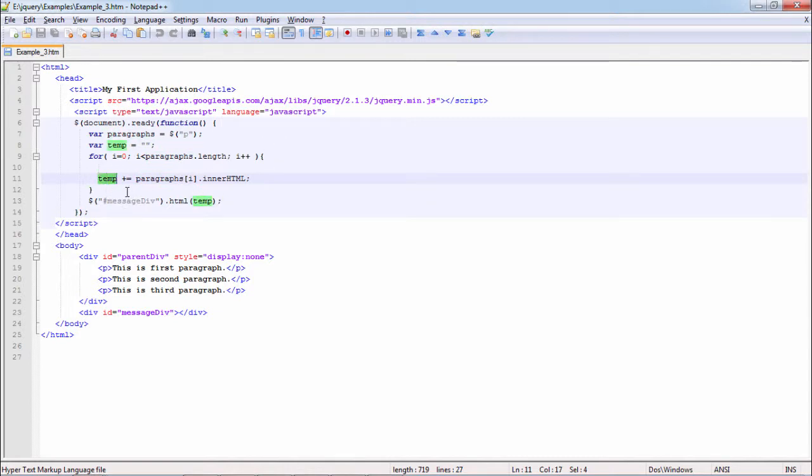We are iterating it using for loop and getting the inner HTML of each paragraph in the temp variable. Then we are printing this value in message div. So message div output would be this is first paragraph, this is second paragraph, this is third paragraph in same line. So let us see and verify the output.